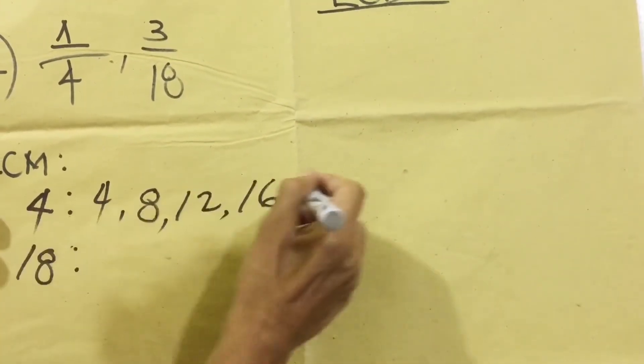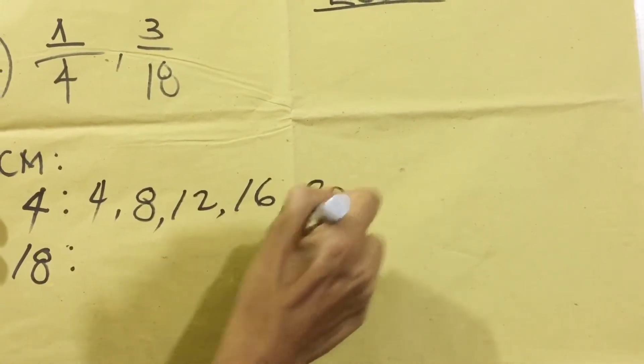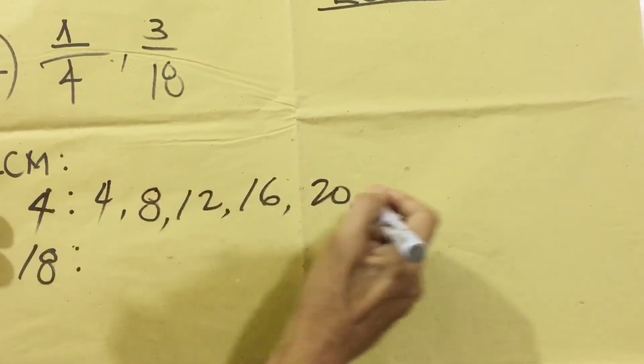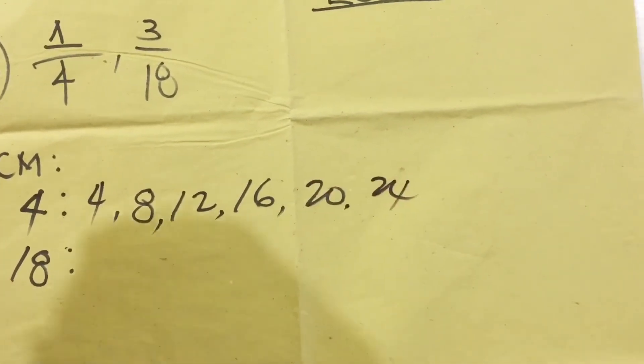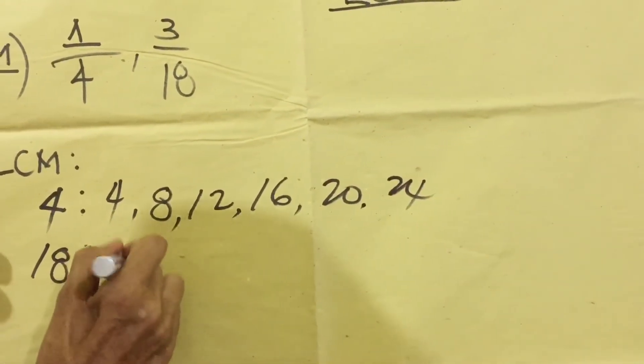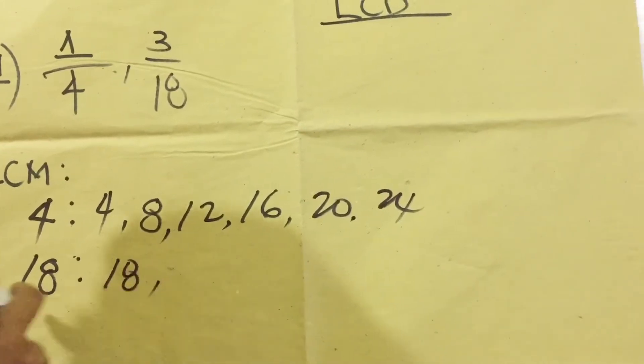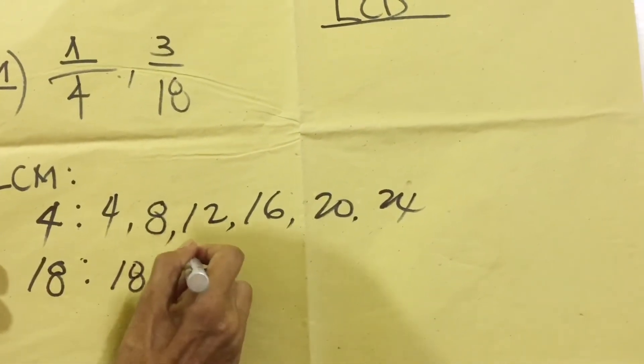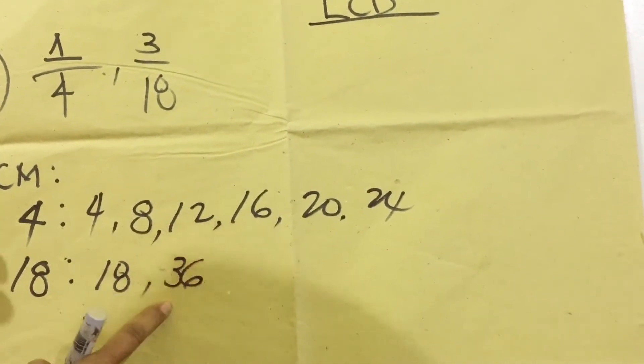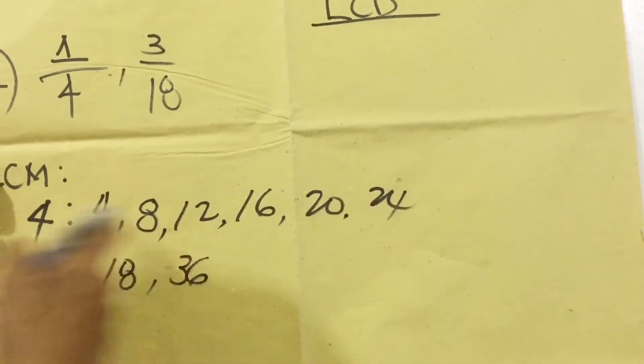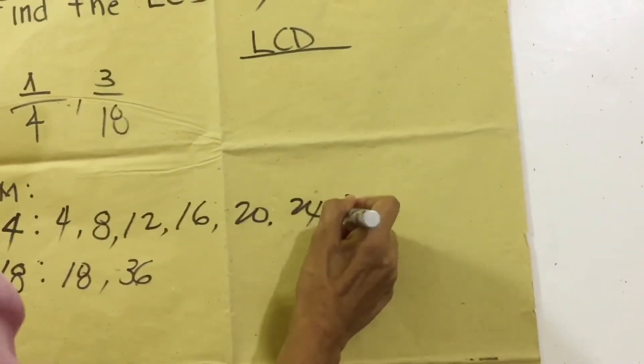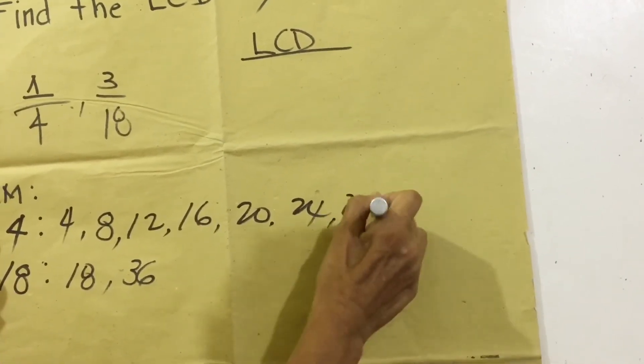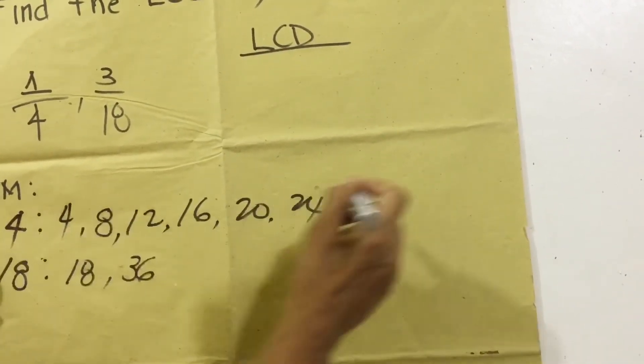Now copy the other denominator. 18 plus 18 equals 36. So we have 36 and 24, so we will continue here. 24 plus 4 equals 28, then 28 plus 4 equals 32.